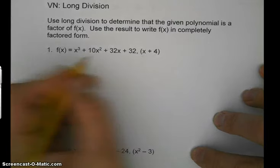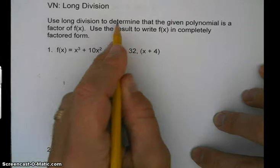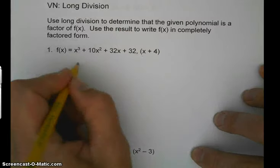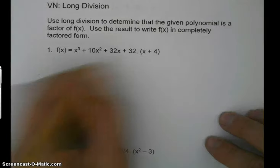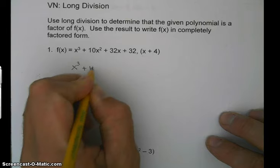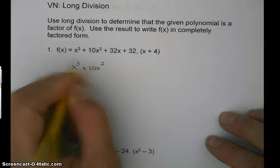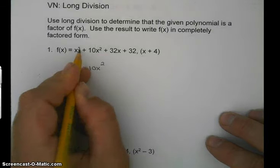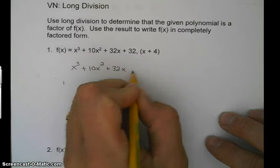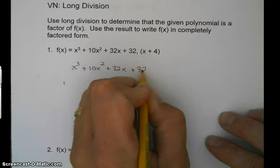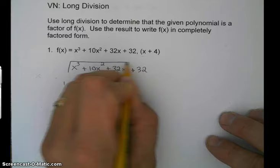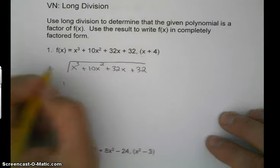We're going to use long division to determine if it is a factor or not. So first thing we're going to do is copy this polynomial down and it needs to go in descending order. So 3, 2, exponent 1, and then our constant. Then we draw our division symbol and we put x plus 4 out here.